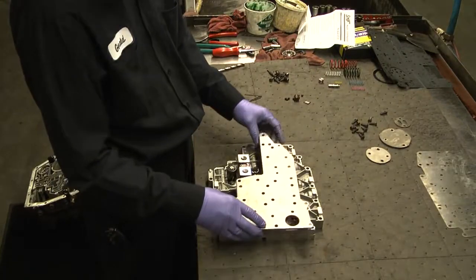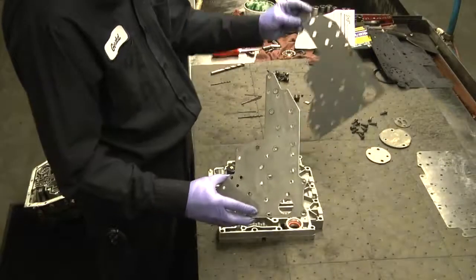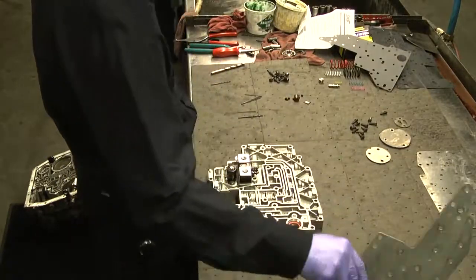The top cover gasket is also supplied in the kit, so don't worry about ripping that one, you get a new one.